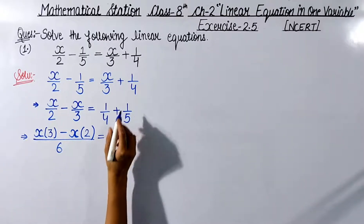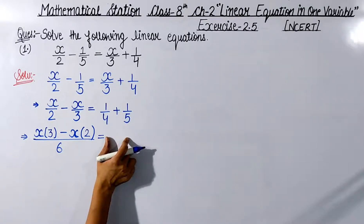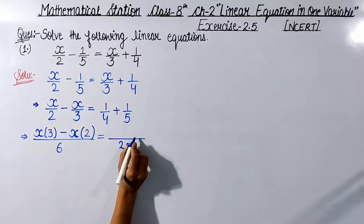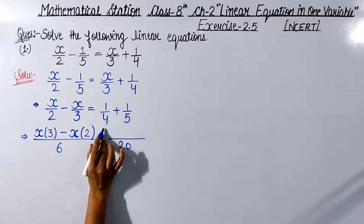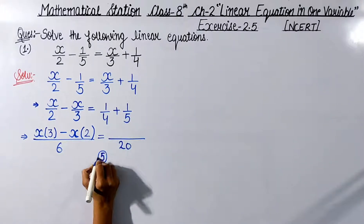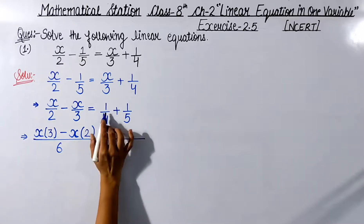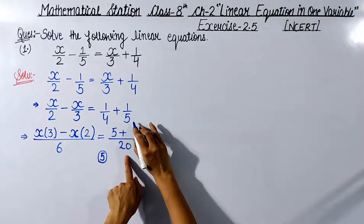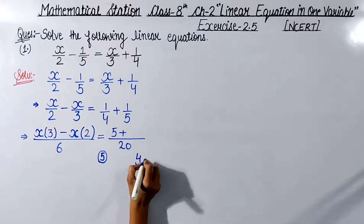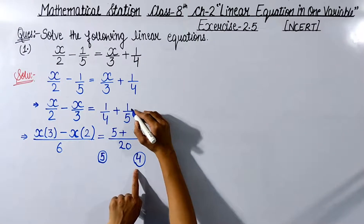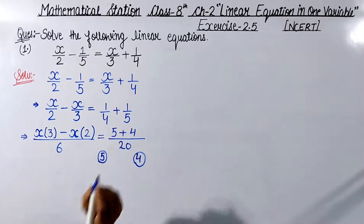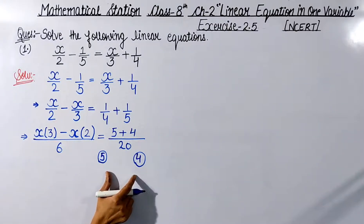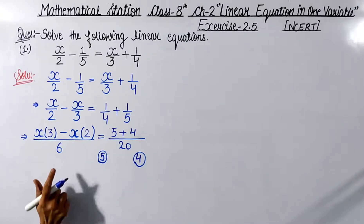On the RHS, 1 upon 4 plus 1 upon 5 — we take the LCM of 4 and 5, which is 20. The denominator is 20. Dividing 20 by 4 gives 5, so the numerator gets 5; dividing 20 by 5 gives 4, so the numerator gets plus 4. The RHS becomes 5 plus 4 upon 20, which equals 9 upon 20. In one question I have taught you two methods, and you can use both.